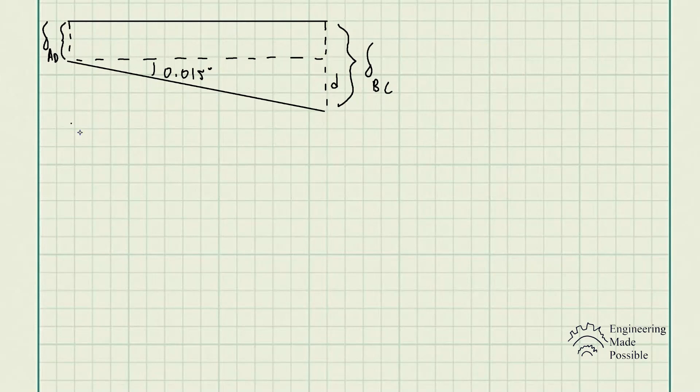Just looking at this, the deformation of cable BC here, delta BC, is equivalent to d—that height that we calculated for that tilt needed—plus the deformation of cable AD. So here's another relationship which we're going to be using to actually solve for it.